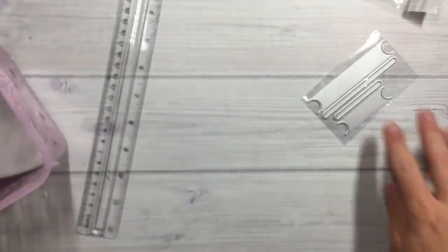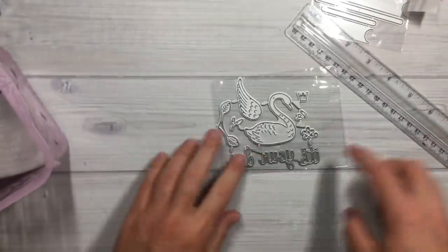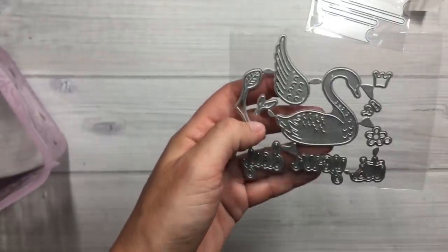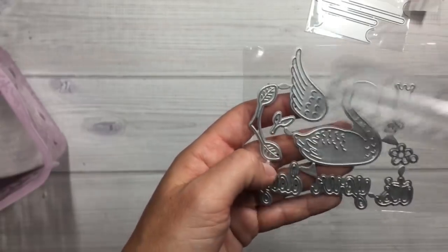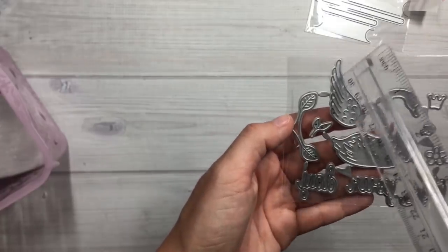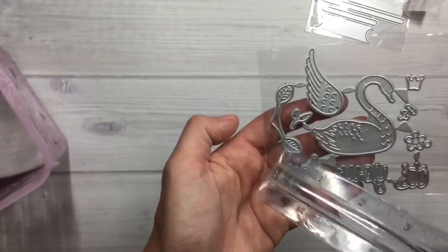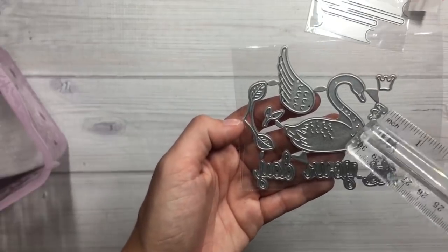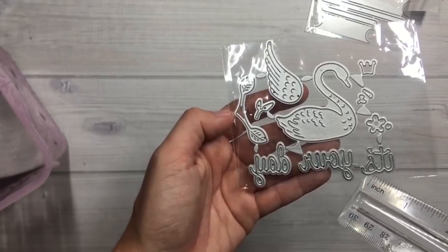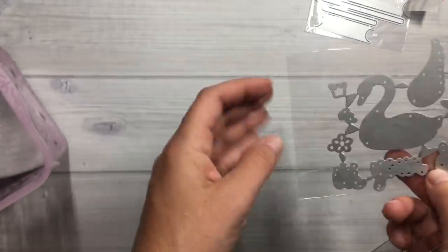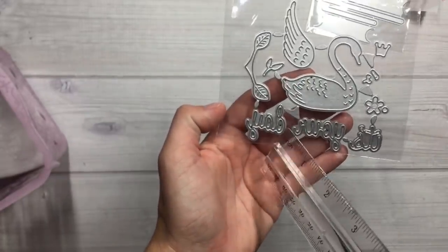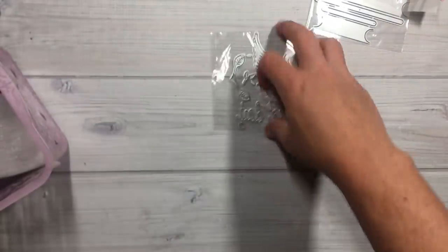Okay next is this swan die. This is my third swan die I own, you can never have enough. This swan is about two inches wide by a little under two inches tall. Then it comes with the layering piece with the feathers, then you can layer the little leaves and the flower, the crown, the beak pieces. I can't read this backwards, sorry guys, I don't know what that says.